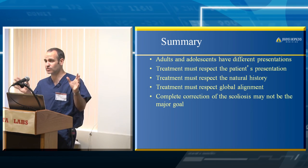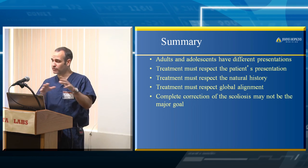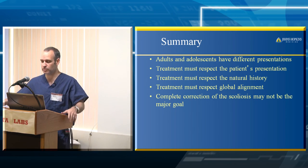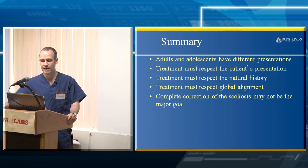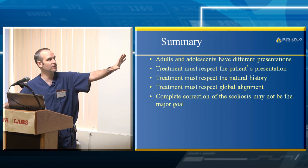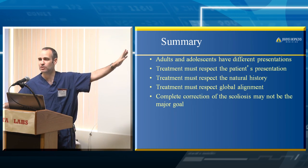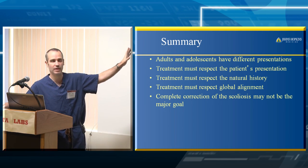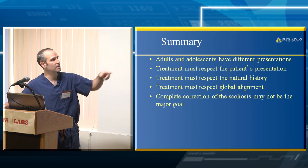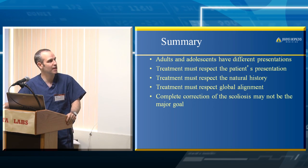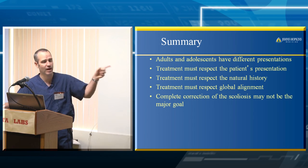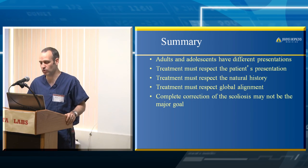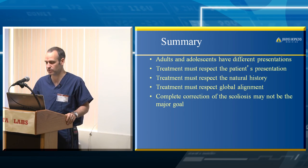In summary, from the coronal perspective — and you have to put this together with sagittal and techniques — adolescents and adults have different presentations, and coronal issues tend to be more prominent in children with AIS. Treatment depends on the presentation, natural history, and global alignment. You have to think about your goals in order to not send patients off balance. Thank you very much.